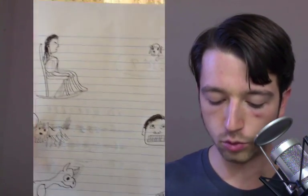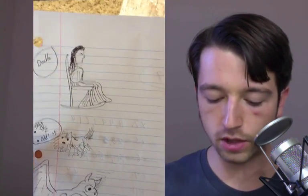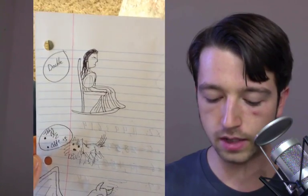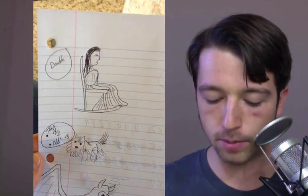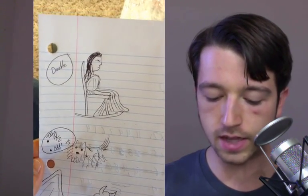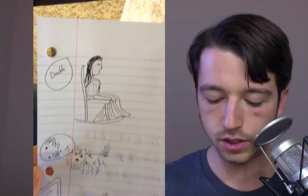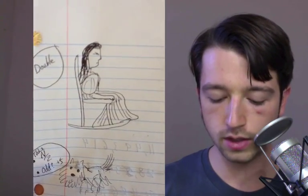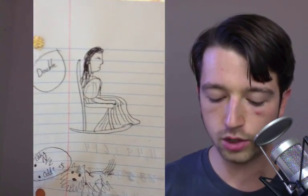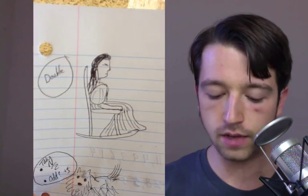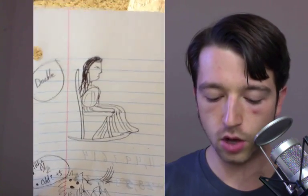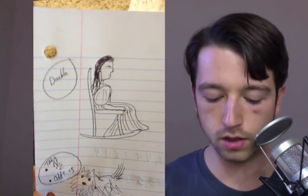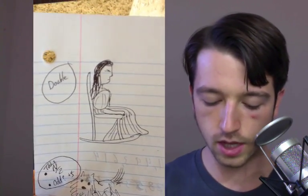The rules for memorizing Trachtenberg math, as I described in the podcast episode, are that you just memorize these little steps. For number 2, for example, all you have to do is double each digit. That's pretty easy for me to associate with Jane, my character here, because she's productive — she doubles things.